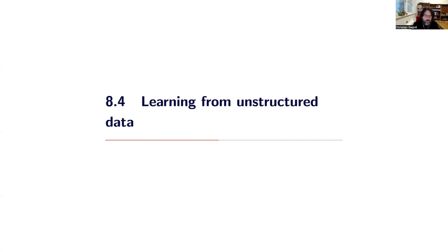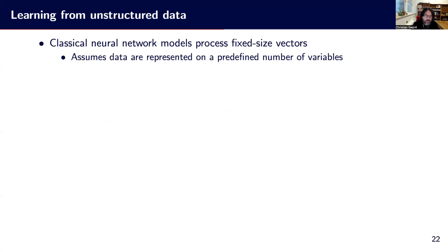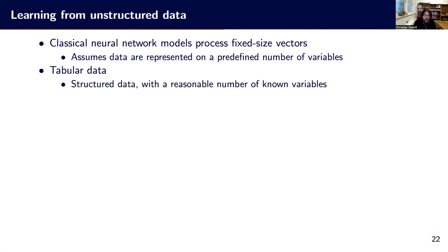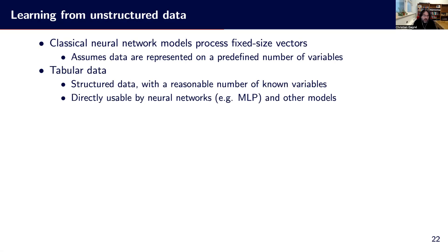Now we will see some approaches for learning from unstructured data. The idea is that in classical neural networks, we are used to dealing with fixed-size vectors — we assume that data are represented as a predefined number of variables, which are often identified by some domain experts. Tabular data is a clear example of structured data with a known set of variables, directly usable by neural networks like multilayer perceptrons, SVMs, and such.